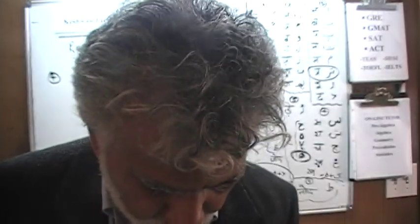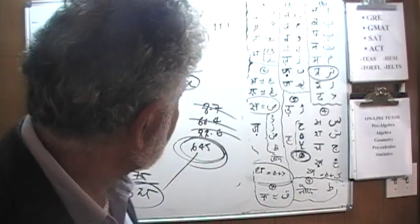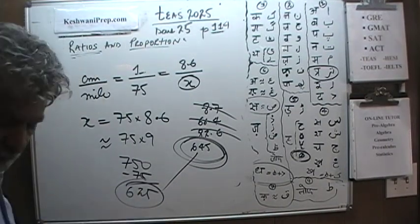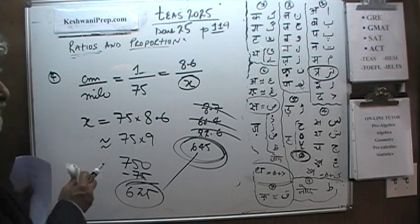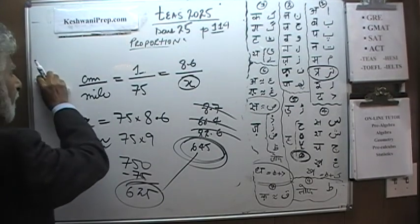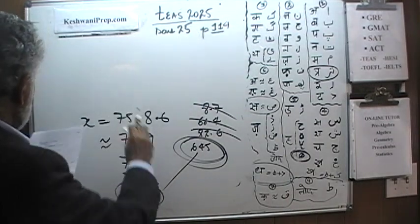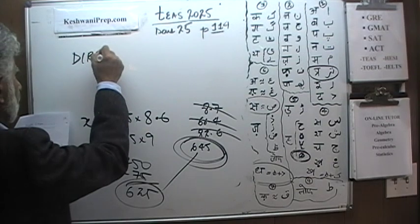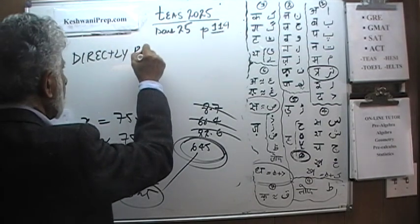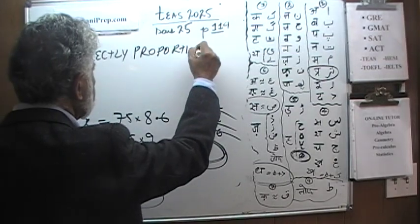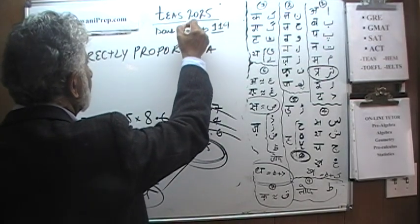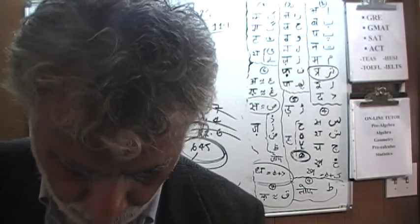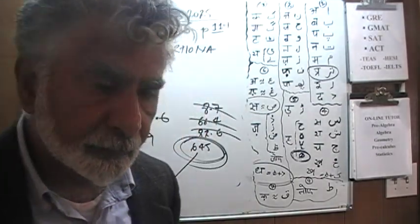We'll meet again tomorrow. And tomorrow we'll deal with the concept of what is known as two variables that are directly proportional. What does it mean for two variables to be directly proportional? That's what we're going to learn tomorrow. And I'll see you then. Okay? Bye now.